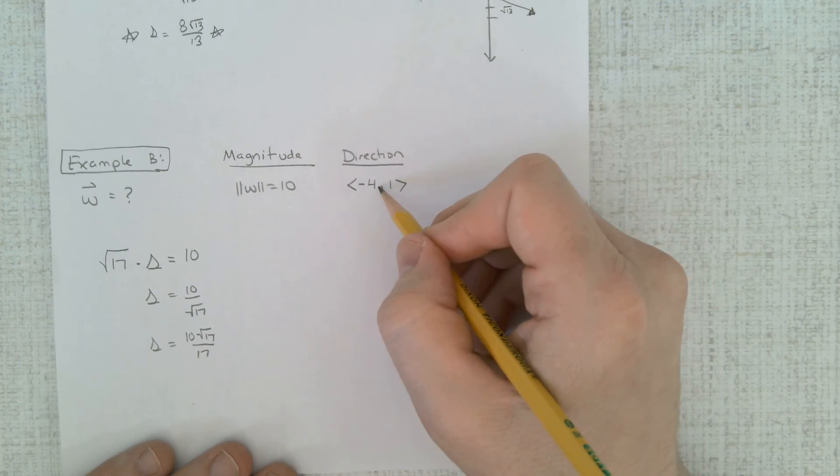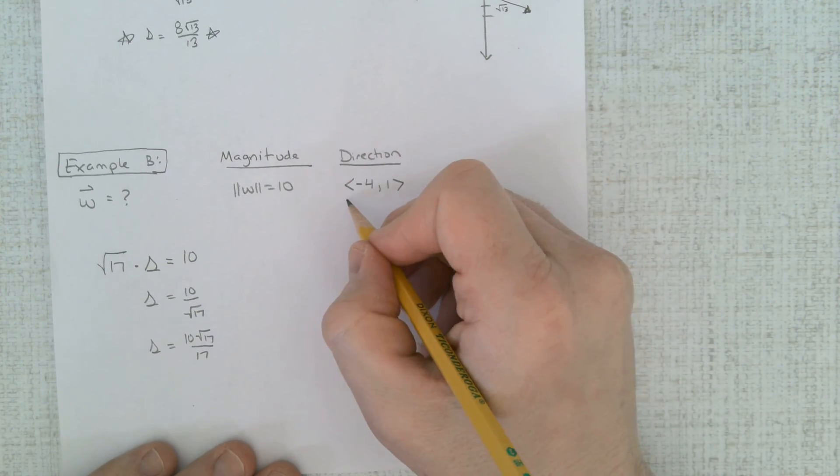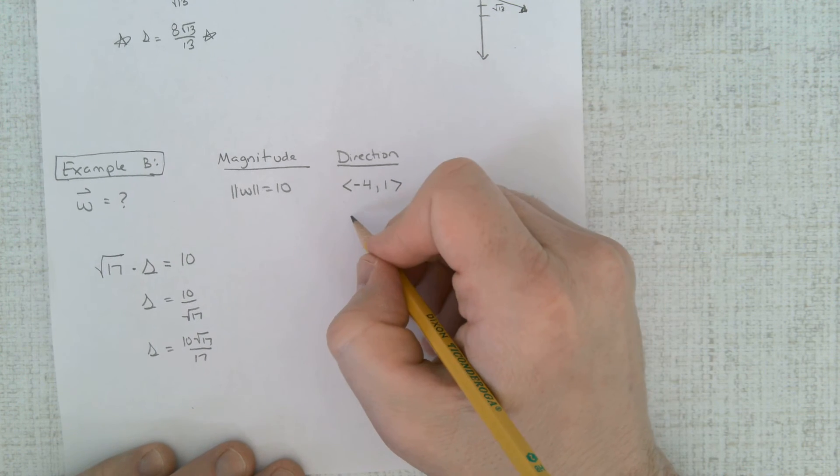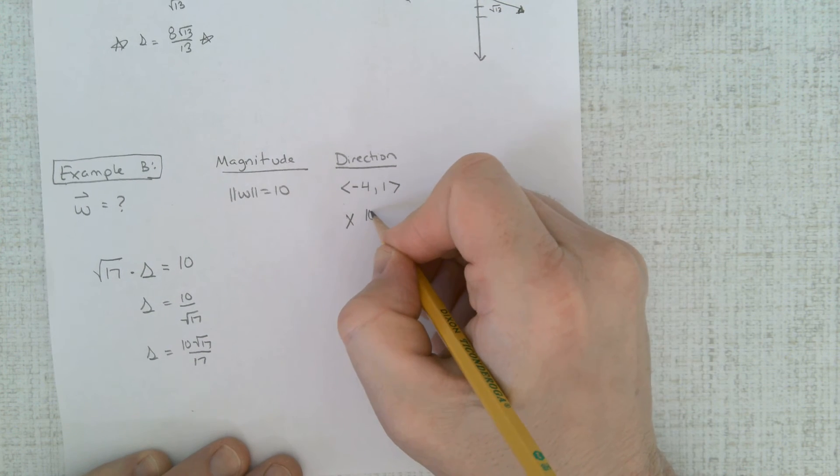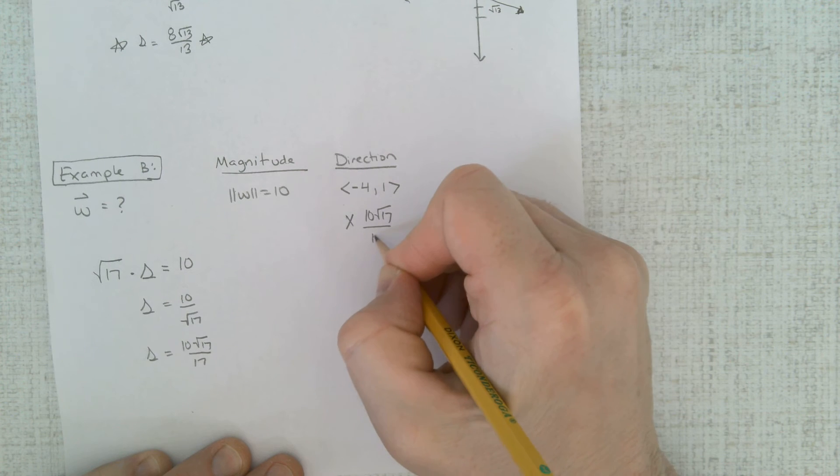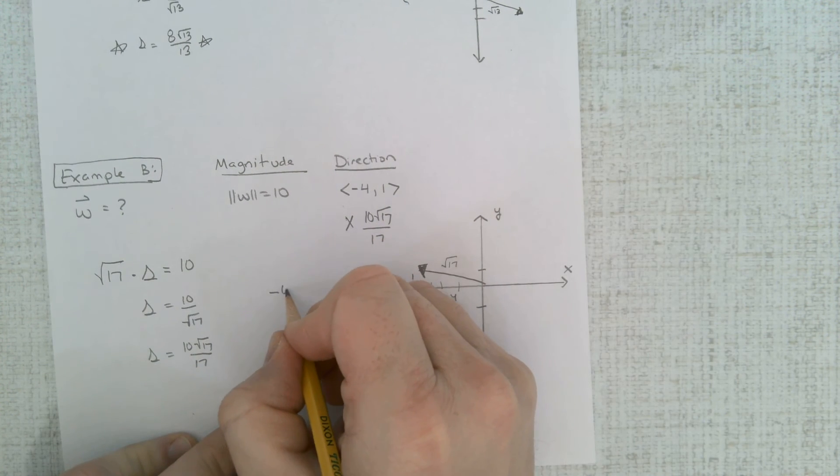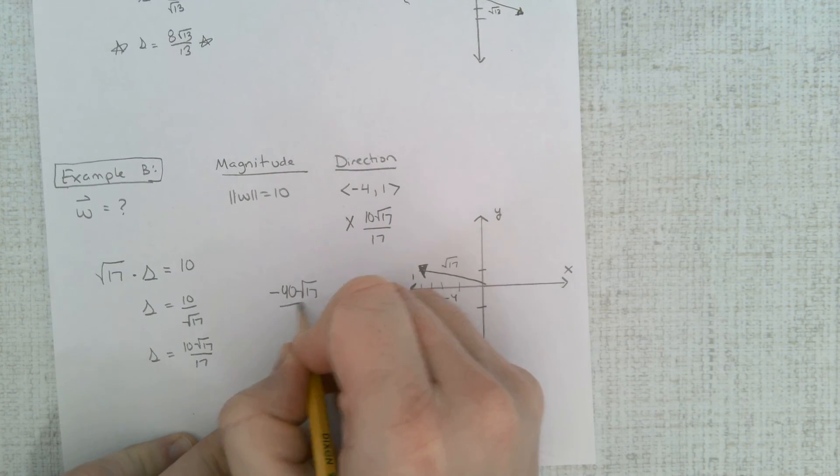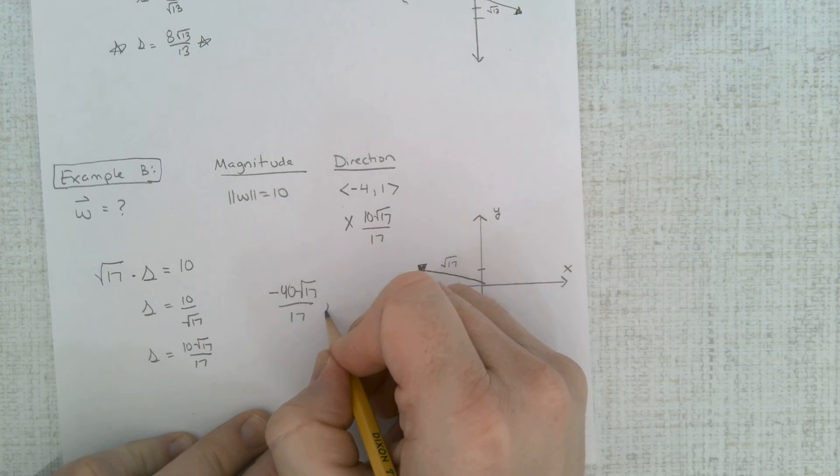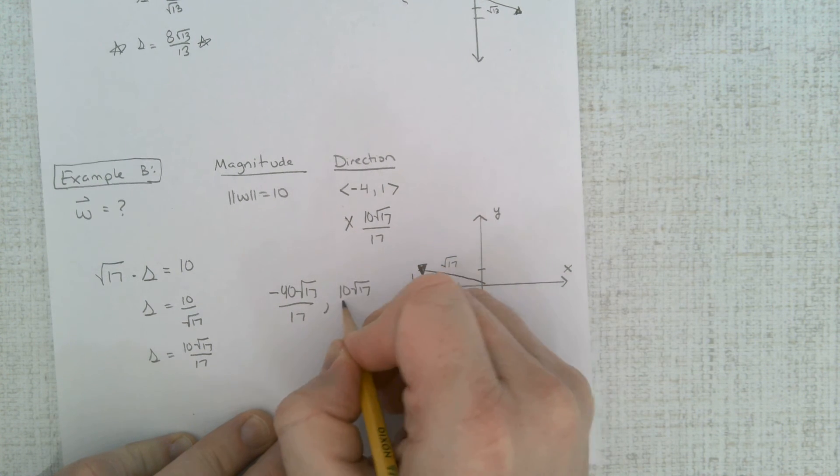And now I'm going to take all of these and multiply them by that. So I just like to do this notation, I just write this here and put times 10 root 17 over 17, and it's negative 40 root 17 over 17 and 10 root 17 over 17.